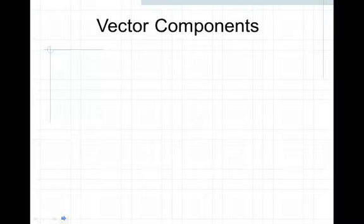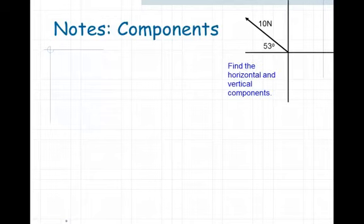Let's find out how to calculate vector components. First, we want to figure out the components of this particular example. We've got a vector that has a magnitude of 10 newtons at an angle of 53 degrees, and we want to find the horizontal and vertical components.